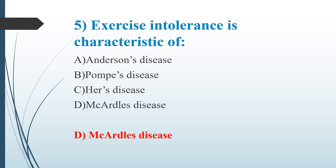To summarize: Anderson's disease is GSD type 4, Pompe's disease is type 2, Hers' disease is type 6, and McArdle's disease is GSD type 5.